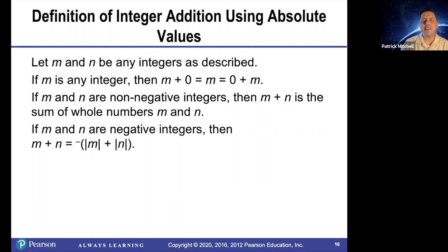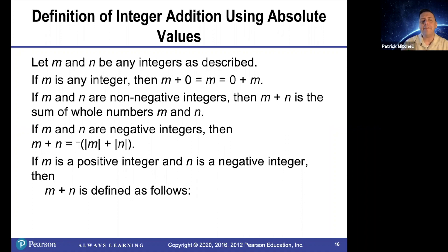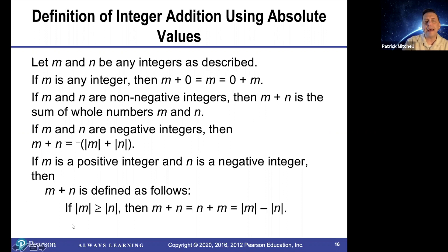Negative two plus negative six is the opposite of two plus six. For example, if m is positive and n is negative, then m plus n is defined as follows: if the absolute value of m is greater than or equal to the absolute value of n, then m plus n and n plus m are both equal to the absolute value of m minus the absolute value of n.